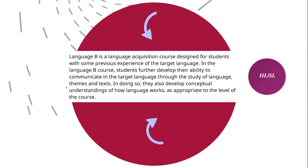According to the guide, which you'll find on our BC main page and in the resources section: Language B is a language acquisition course designed for students with some previous experience of the target language. In this course, students develop their ability to communicate in the target language — which is English — through the study of language, themes, and texts. That means we'll be looking at certain themes and applying them throughout all our units, and students also develop conceptual understanding of how language works.